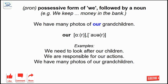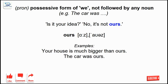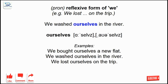Our: possessive form of we, followed by a noun. Ours: possessive form of we, not followed by any noun. Ourselves: reflexive form of we.